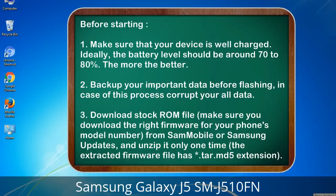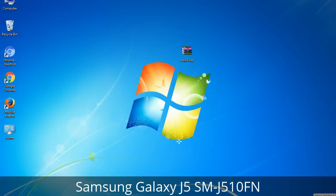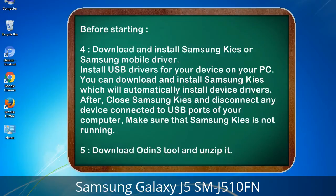Download firmware from Sammobile or Samsung Updates, and unzip it only one time. The extracted firmware file has a *.tar.md5 extension. 4. Download and install Samsung KIES or Samsung mobile driver. Install USB drivers for your device on your PC. You can download and install Samsung KIES which will automatically install device drivers. After, close Samsung KIES and disconnect any device connected to USB ports of your computer — make sure that Samsung KIES is not running.